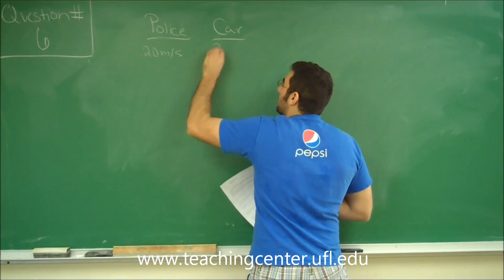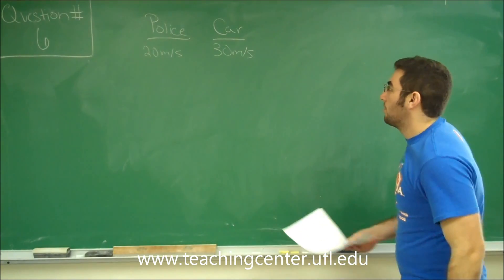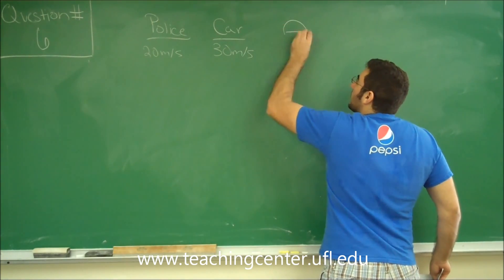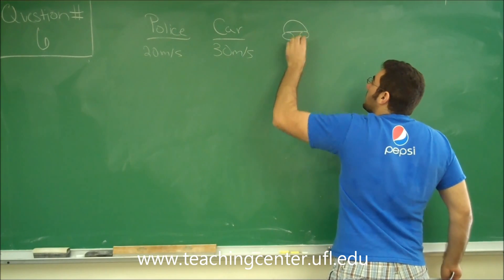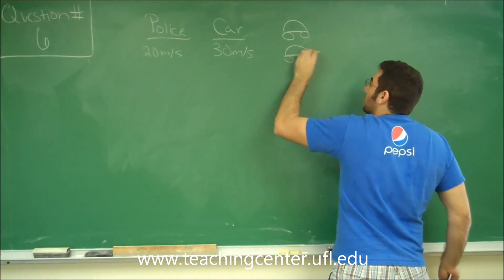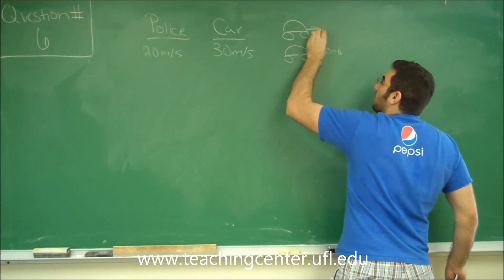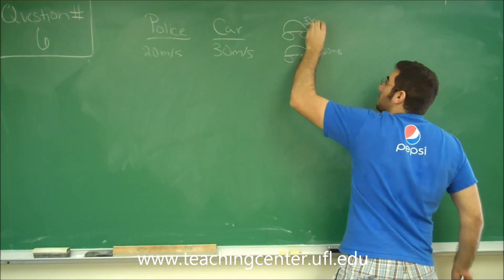So they're going in the same direction. We'll just say they're going to the right so that we can use all positive numbers. So this is your car and this is your police cruiser who's cruising at 20 meters per second. And your car flies by at 30 meters per second.